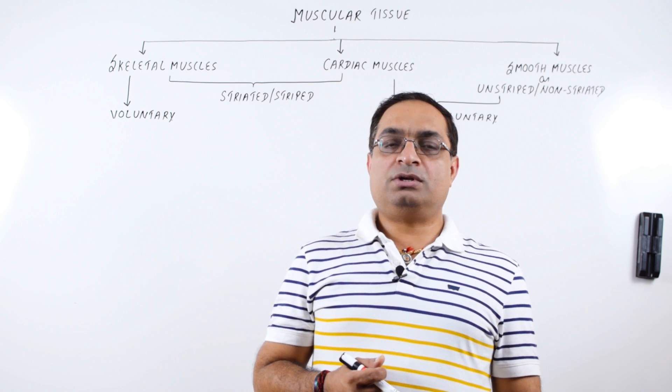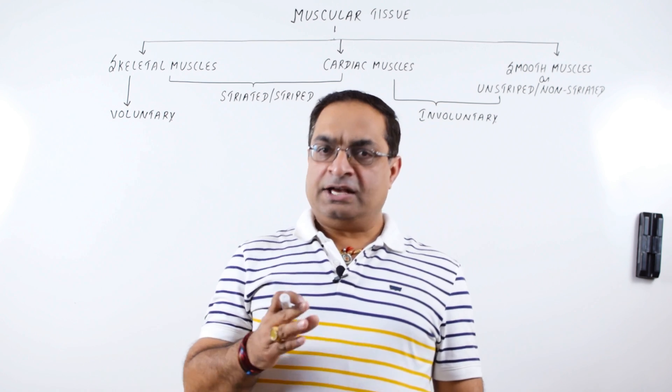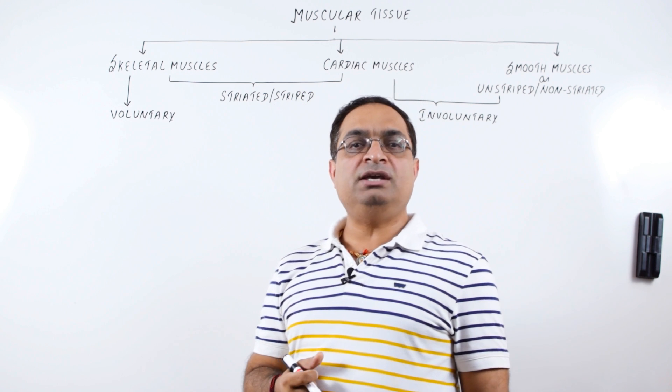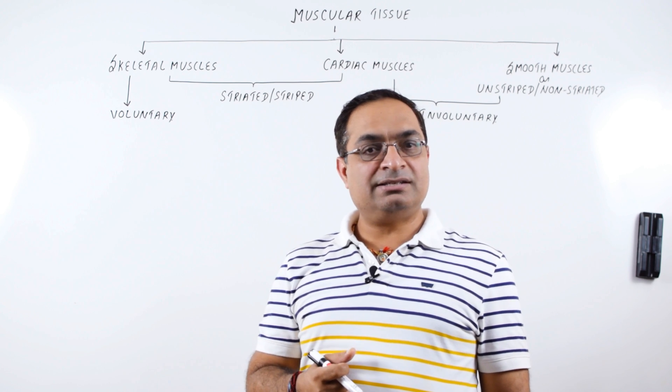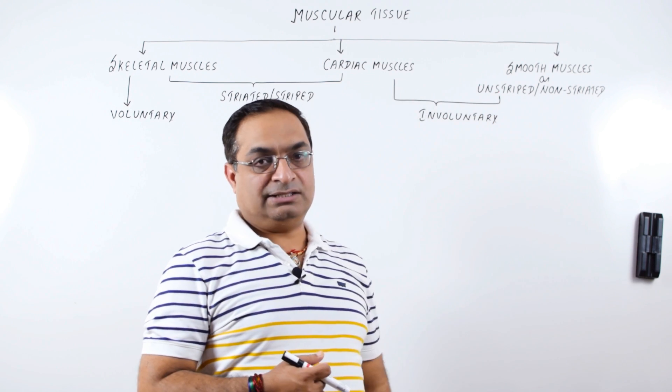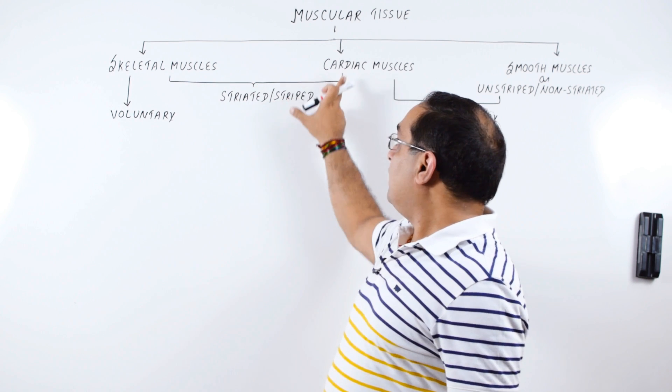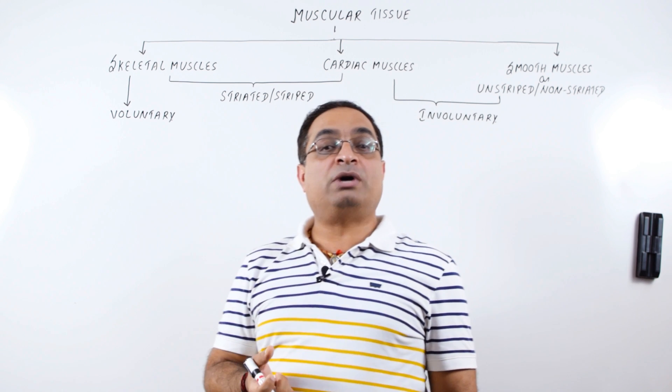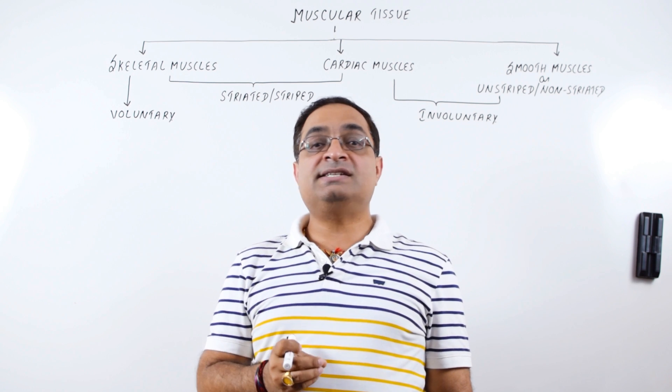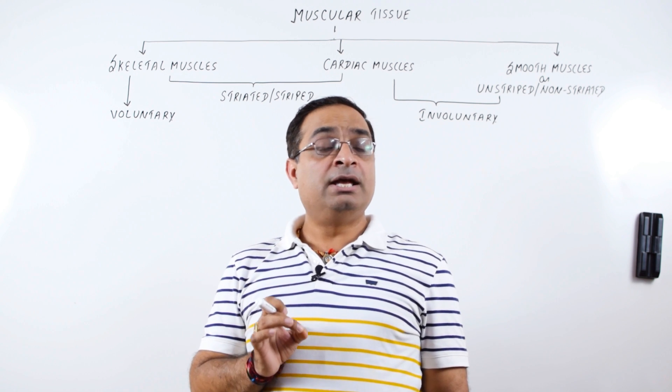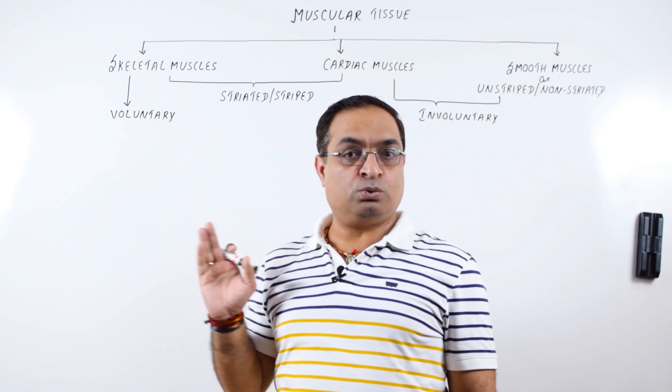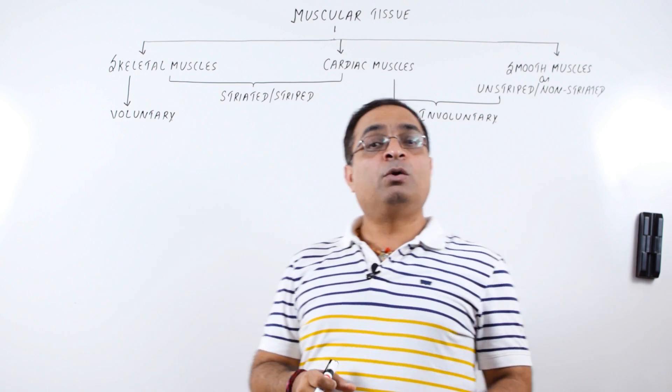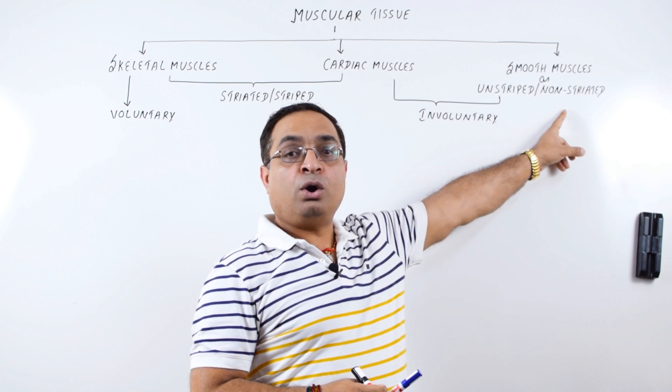The topic of our discussion today is Muscular Tissue. As you can see, we have divided Muscular Tissue into three broad categories. There are three types of muscles: Skeletal Muscles, Cardiac Muscles, and Smooth Muscles. Skeletal Muscles and Cardiac Muscles are also called Striated Muscles or Striped Muscles. When you use the word striations, that means when you look at these muscle fibers under a simple microscope, these show alternate light and dark bands which we will discuss. Because of those bands, we call these muscles striated muscles. Whereas smooth muscles are unstriped or non-striated.